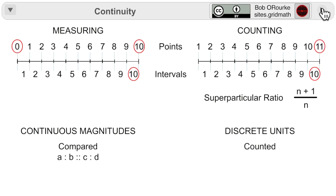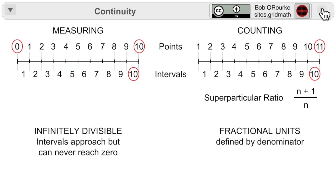In Euclid, lines were continuous magnitudes. They were compared in a proportion, A is to B as C is to D. If the line is thought of as infinitely divisible, the intervals can approach but they can never actually reach a zero value.